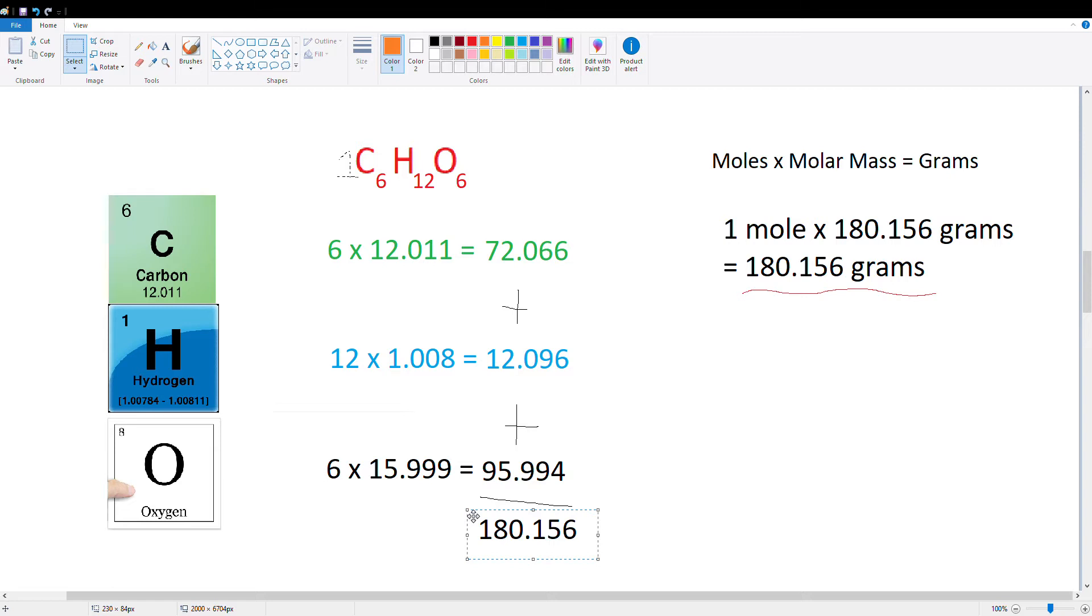So again, we go back to our formula, and we can see that moles times molar mass is equal to grams. So we have 1 mole, because the imaginary 1, times 180.156 grams. This is the molar mass, which we got from here, adding all three of these together. And 1 mole times that is just the molar mass again, which is 180.156 grams. So that's how we find that.